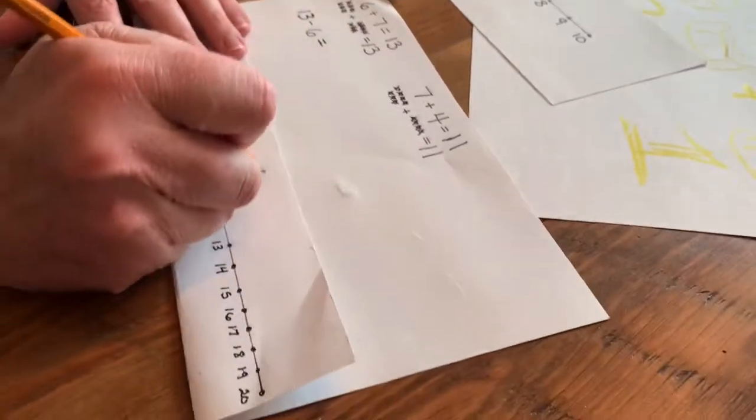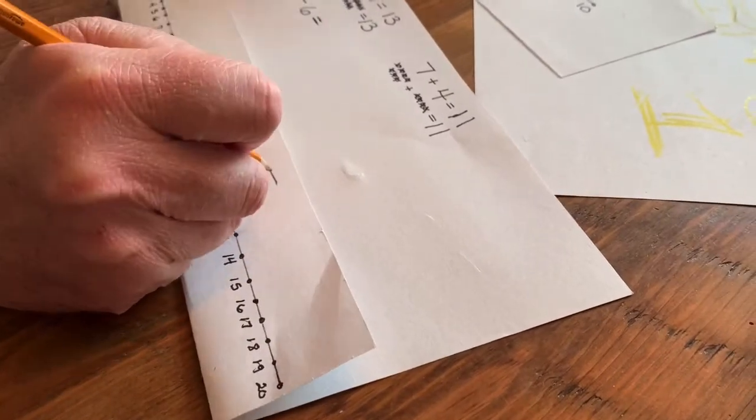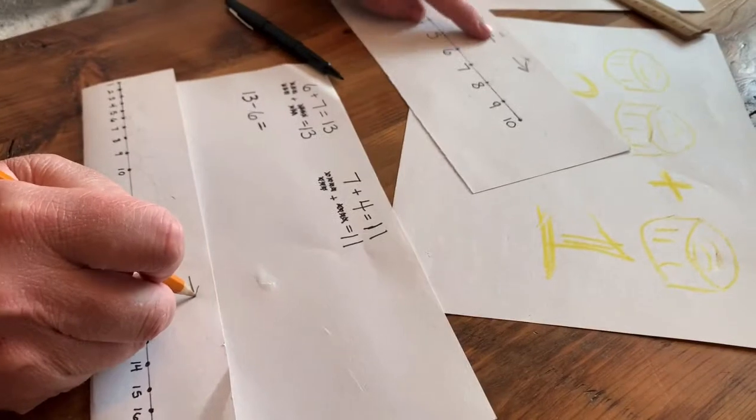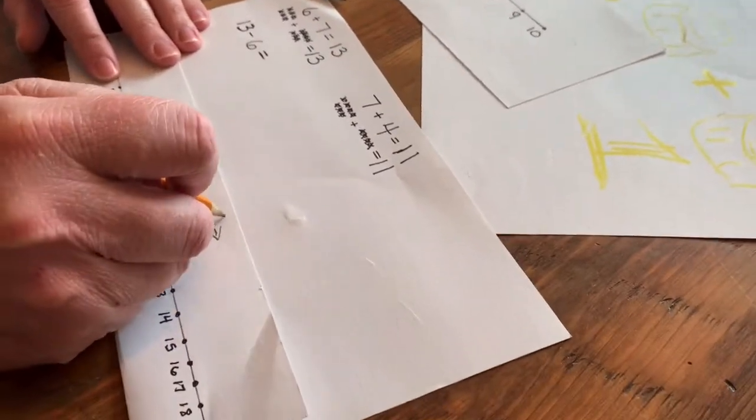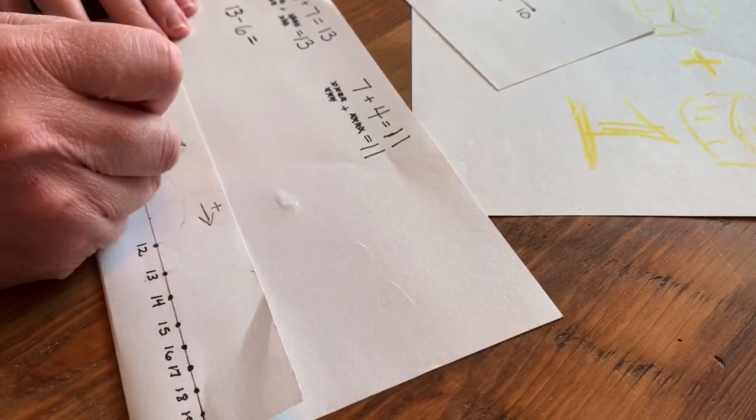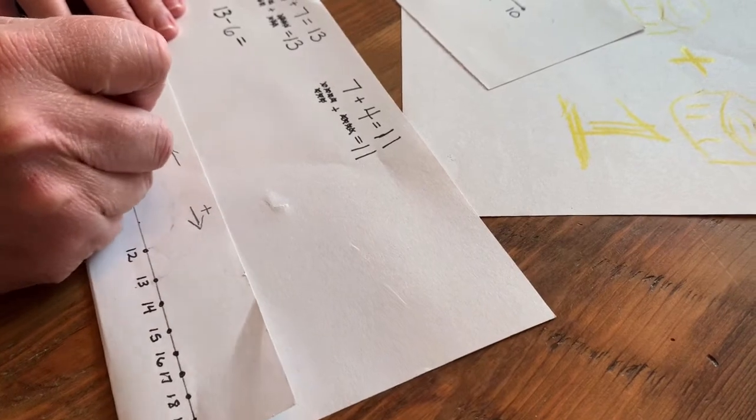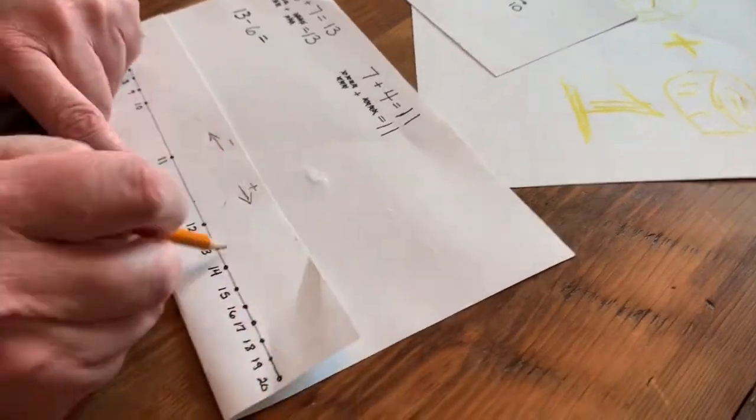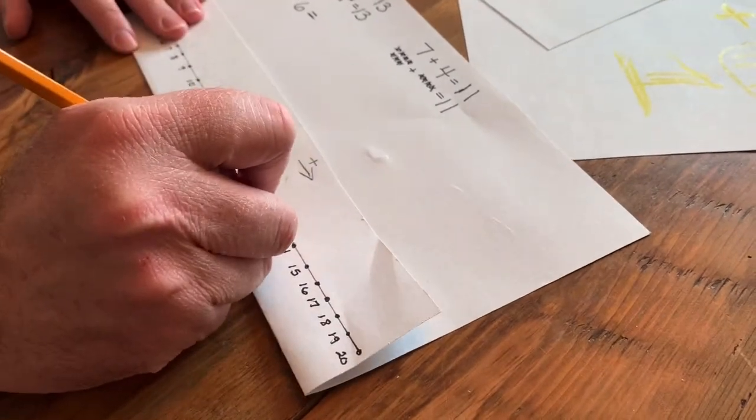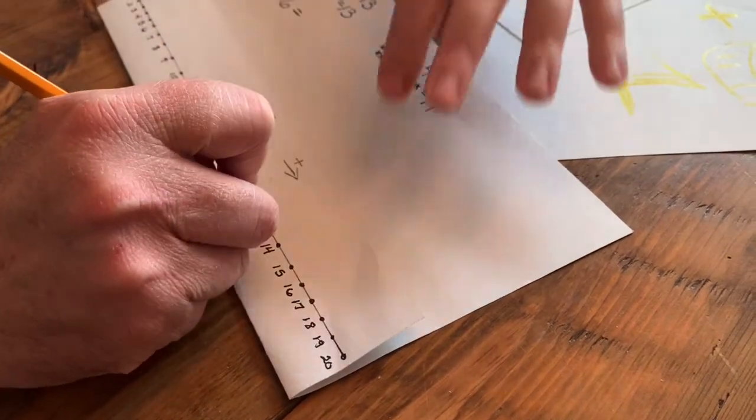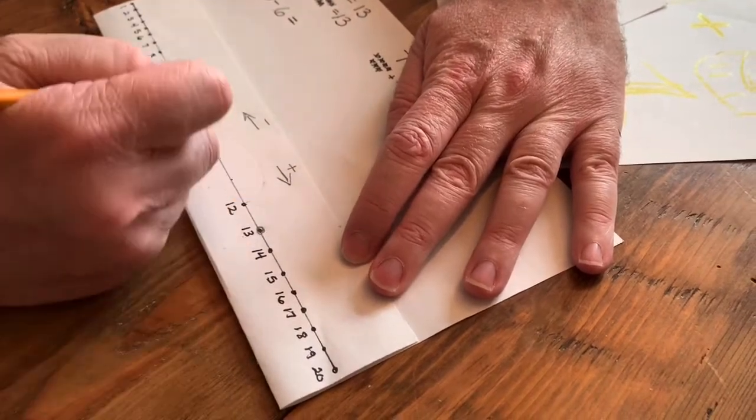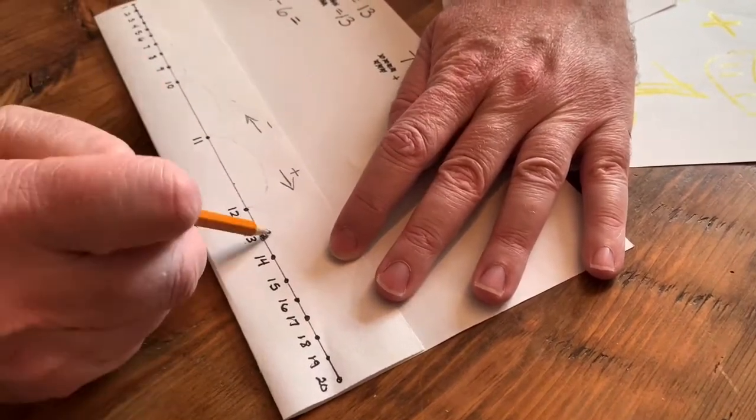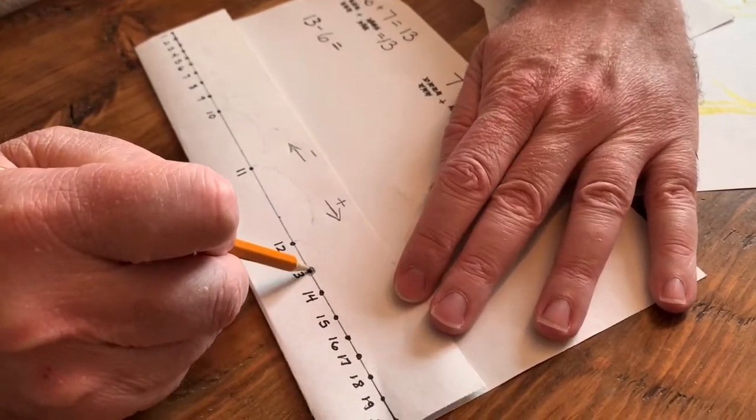So 13 minus 6. So the first thing I'm going to do is I'm going to draw my little reminder arrows like I did here on this number line that if I'm adding, I'm going this way. If I'm subtracting, I'm going this way. So I'm going to start at 13. I'm going to put my pencil here and circle it so I remember.